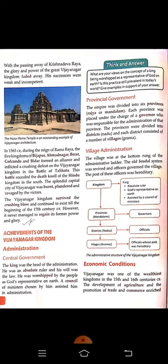Religious tolerance: The Vijayanagara kingdom was deeply rooted in Hinduism, but its rulers were tolerant and liberal in their outlook. They employed Muslims in the army and administration, and there was no discrimination between Christians, Jews, Muslims, and Hindus.